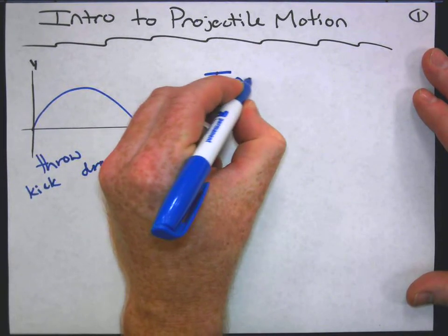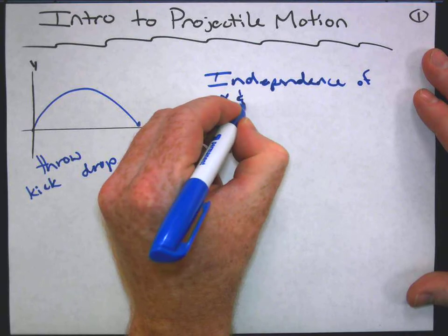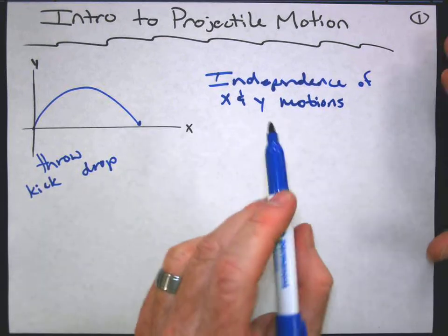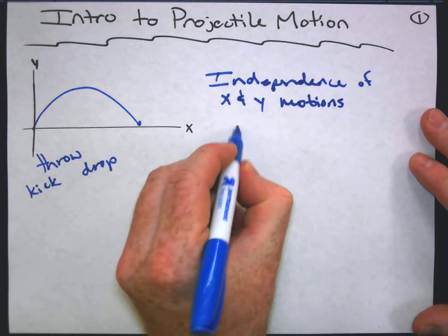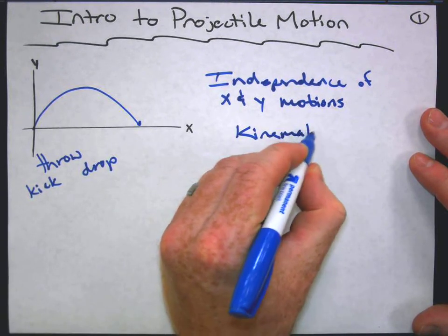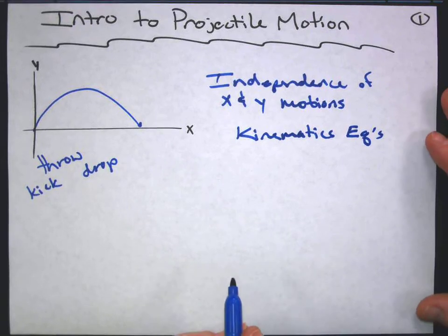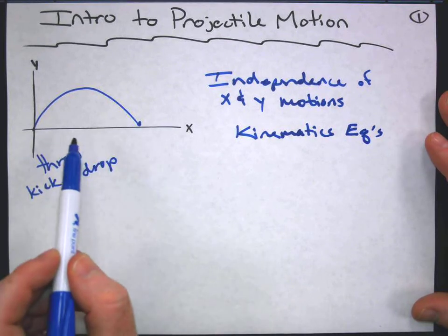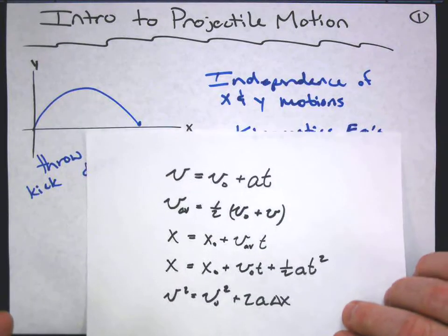That's a real important idea — the independence of X and Y motions. We're really talking about the X and Y components of the motion. That also means that the equations of kinematics can apply to the X and Y directions separately. You deal with the horizontal information using the appropriate equations, and the vertical information using the appropriate equations there.